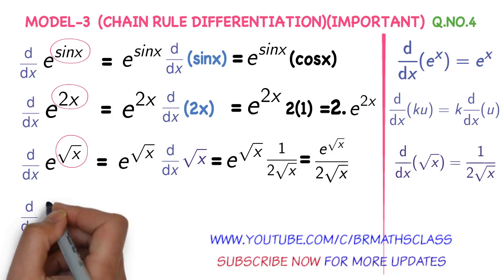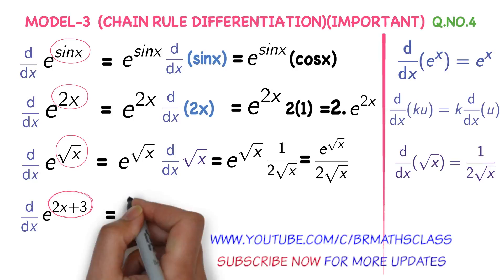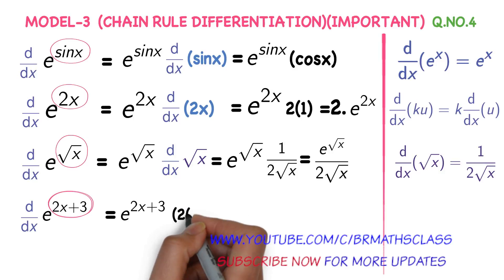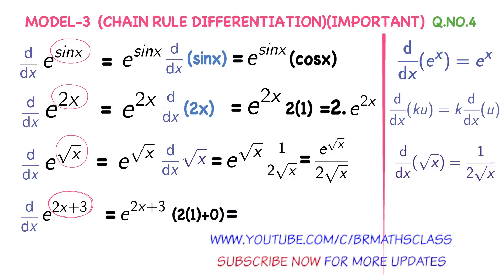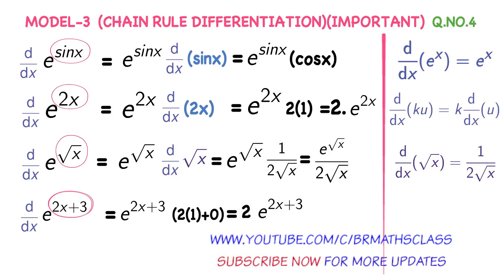Derivative of e^(2x+3). Imagine 2x+3 as x; it looks like e^x. Therefore, the derivative of e^(2x+3) is e^(2x+3) into the derivative of 2x+3. The derivative of 2x+3 equals the derivative of 2x plus the derivative of 3. Derivative of 2x is 2 · 1 = 2, and derivative of 3 (a constant) is 0. So the derivative of e^(2x+3) is 2 · e^(2x+3).